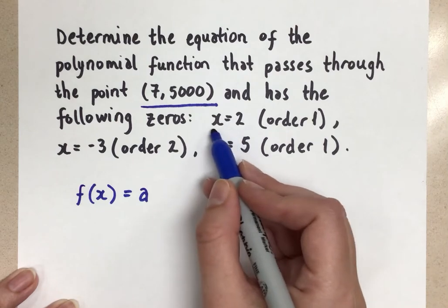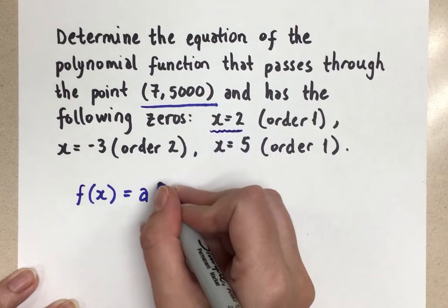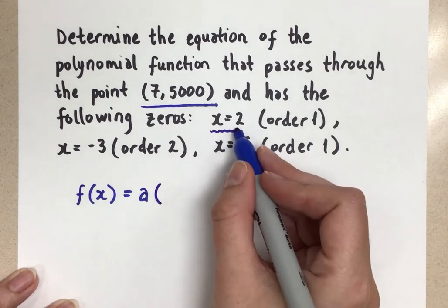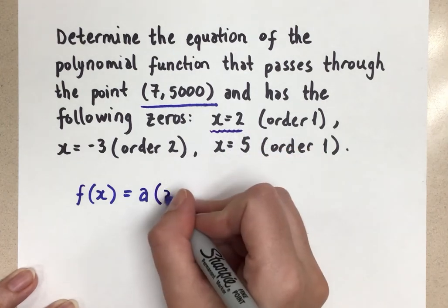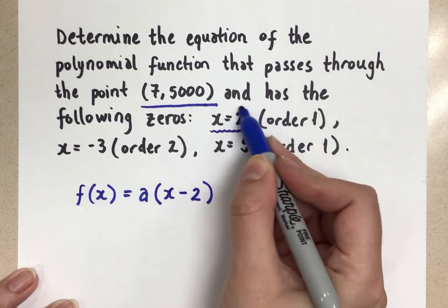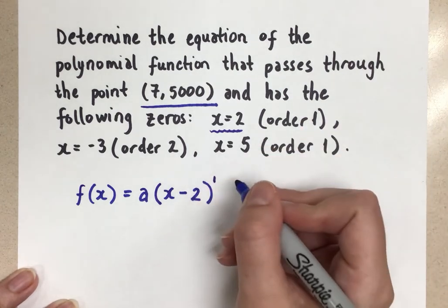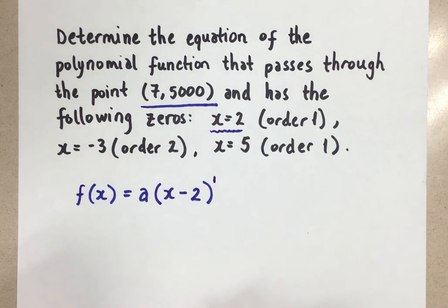In factored form, let's do the first zero here. x equals positive 2. So in the factor, if the zero is positive 2, our factor needs to be x minus 2. That means when you plug in positive 2 for x, 2 minus 2 is 0. That's what should happen. The order is 1. So the exponent on that factor is just a 1. We can put it in and we can not put it in. It's just a 1. It doesn't matter.